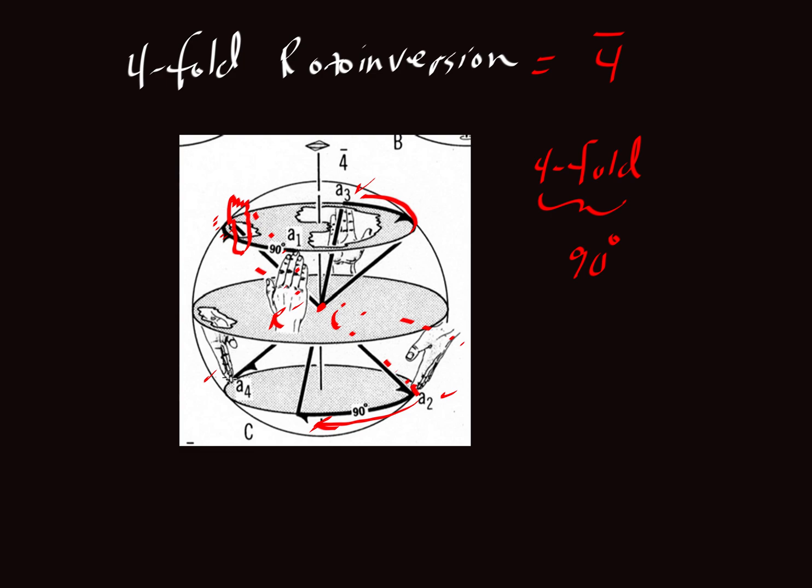And then if we take A4 and rotate it again, we'd end up here at the bottom back part of this sphere. And if we inverted it through that point, that inversion point there, then we'd be back at A1.